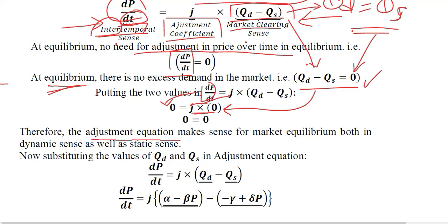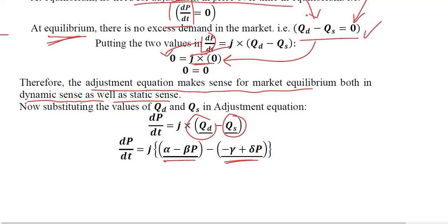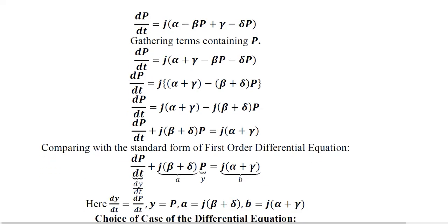The adjustment equation is mentioned again and we take the dynamic sense: we substitute the values of QD and QS that are already given. The rest of the equation — J and dp/dt on the left-hand side — remains the same. We multiply J through the entire expression and reverse the signs inside the bracket because there is a negative sign outside. In the first step, after simplifying that negative sign, signs inside the bracket reverse, and we gather the terms containing P.